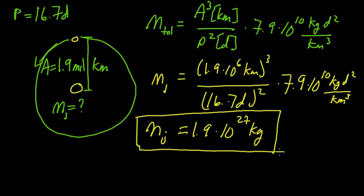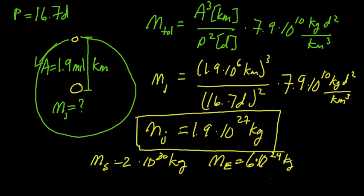If we wanted to compare it to things, the mass of the sun is approximately 2 times 10 to the 30 kilograms. So we're talking about 1,000 times less massive than the sun. The mass of the earth is about 6 times 10 to the 24 kilograms. So we're talking about 500 times more massive than the earth.